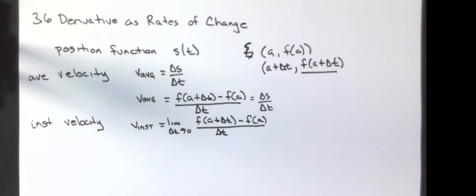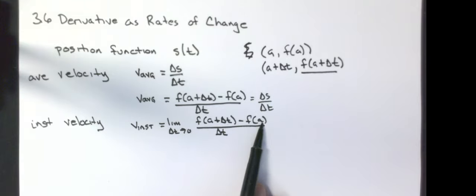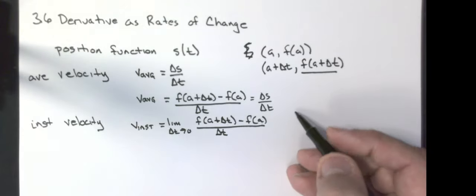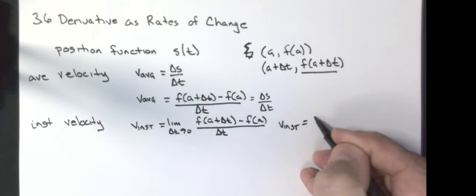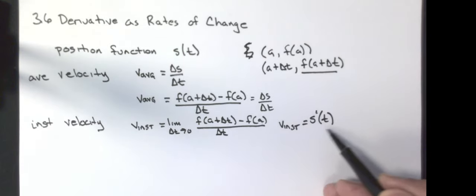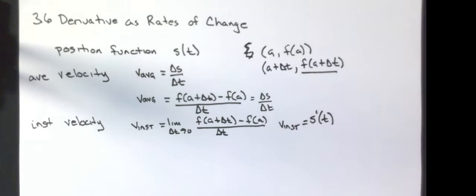That is the exact same thing we used as our definition, except we did X plus H minus F of X, all over H. It's the same form. Anytime you have a limit in that form, this is telling me that the instantaneous velocity is equal to the derivative of my position function.